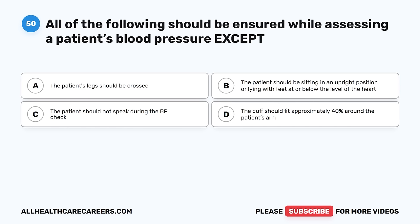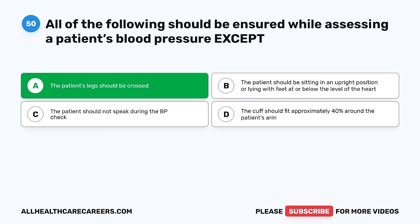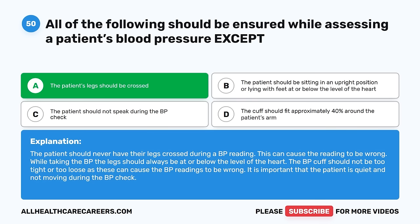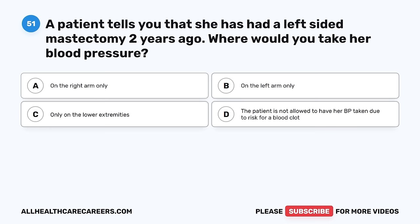Question 50. All of the following should be ensured while assessing a patient's blood pressure except: A. The patient's leg should be crossed. B. The patient should be sitting upright or lying with feet at or below the level of the heart. C. The patient should not speak during the BP check. D. The cuff should fit approximately 40% around the patient's arm. The correct answer is A, the patient's leg should be crossed. The patient should never have their legs crossed during a BP reading as it can cause the reading to be wrong. The leg should always be at or below the level of the heart, the BP cuff should not be too tight or loose, and the patient should be quiet and not moving.